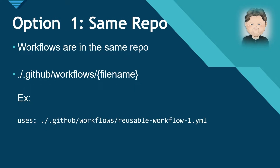The first option is if the calling workflow and the reusable workflow are in the same repository. In this instance, you reference the reusable workflow via a local reference. For example, dot slash dot github slash workflows slash file name. You basically path to the file name of the reusable workflow. In the example below, you can see I'm calling a reusable workflow called reusable workflow workflow1.yml. You'll notice that I'm not specifying an at symbol or a version of the workflow. When calling a workflow from the same repo, you don't have to do that.